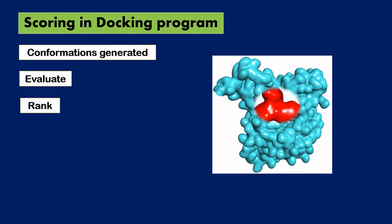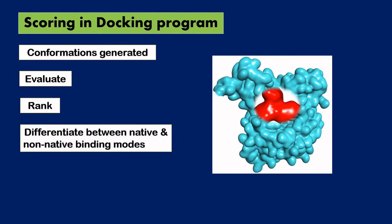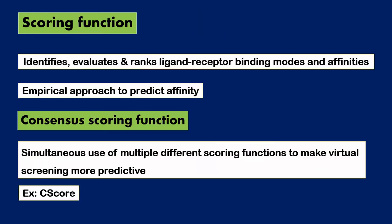So based on the binding affinity of the ligand to the protein, we need to differentiate between the native and non-native binding modes. We need a computational tool which makes this task easier — to evaluate, rank, and differentiate between the native and non-native binding modes. All these functions are performed by using the scoring function. So a scoring function is that which identifies, evaluates, and ranks the ligand-receptor binding modes and affinities.